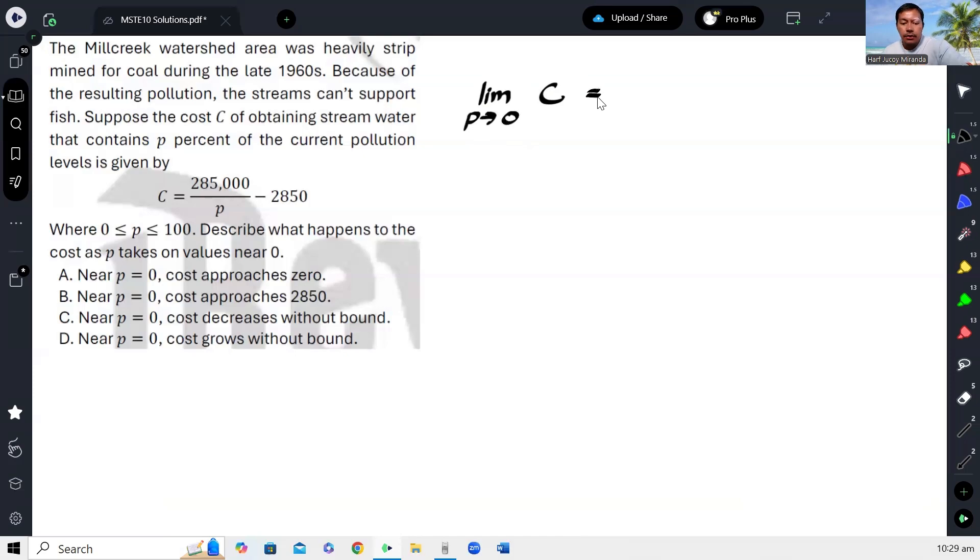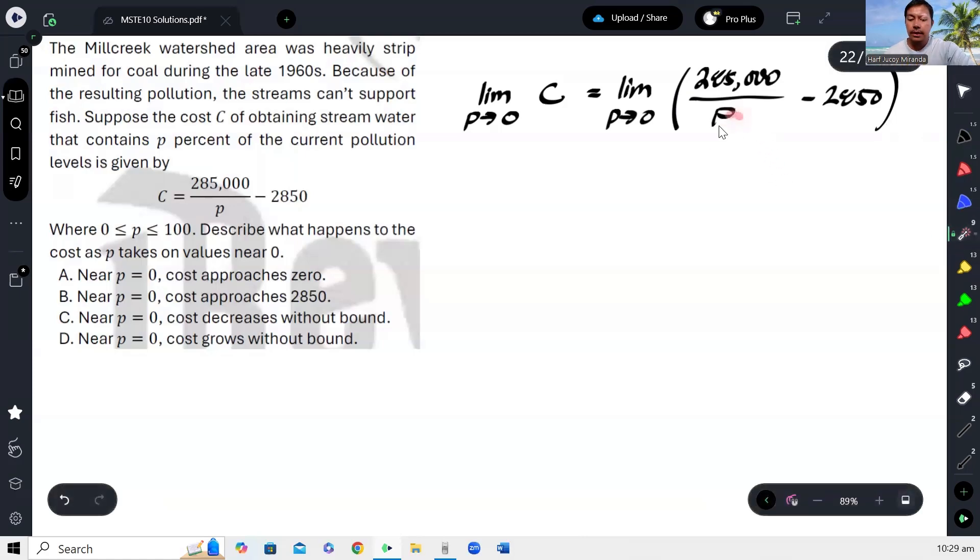And that is equal to the limit as P approaches 0 of 285,000 over P minus 2,850. Okay? Now, as you can see here, when we use the substitution property of limits, if you directly substitute 0 here...